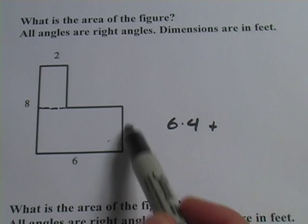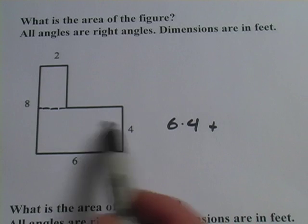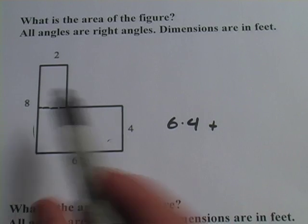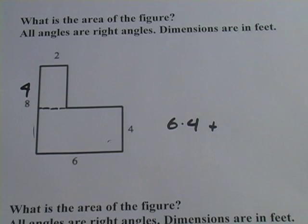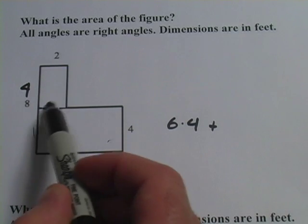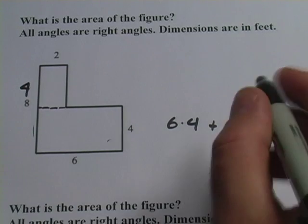Well I see that this side is four. If I subtract that four from this eight, I'm left with four up here. So the area of this rectangle up on top is two times four.